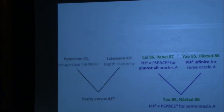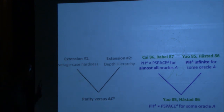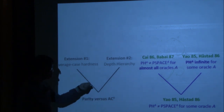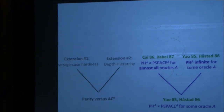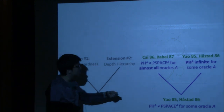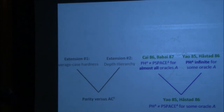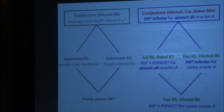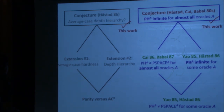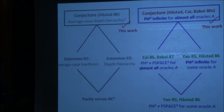Just to note that this looks like it has nothing to do with circuits, but thanks to the connection of Furst-Saxe-Sipser, all these are consequences of a circuit result. PH corresponds to AC0, and PSPACE corresponds to parity. The depth hierarchy theorem separates depth-k Boolean circuits from depth-(k-1) Boolean circuits, corresponding to sigma_k being distinct from sigma_{k-1}, which is exactly the statement that PH is infinite. As a consequence of confirming the conjecture, we get this result in structural complexity.